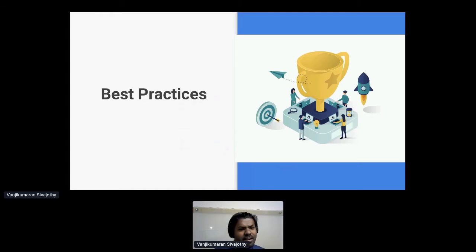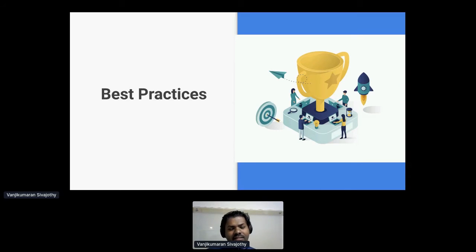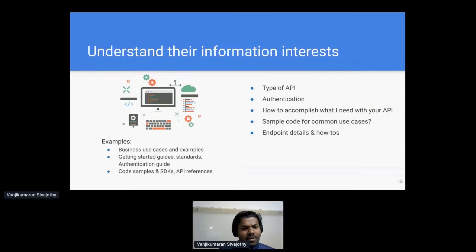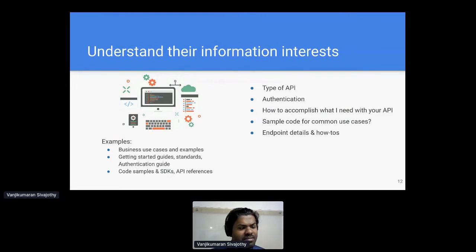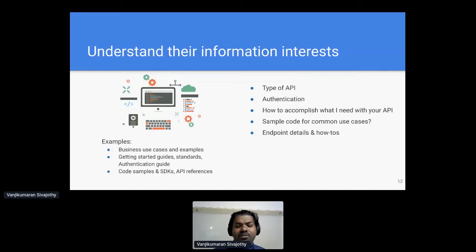With an understanding of the industry, business needs, and different personas, there are plenty of best practices we can enforce to deliver better developer experience and increase API adoption. We can ask multiple key questions with our stakeholders to determine our documentation strategy. At the very first level, we have to investigate which type of API we are going to provide, because API does not always imply RESTful API — it can also be a SOAP API, event-driven API, or any other format to expose your digital interface. We also have to look into the types of APIs that can be created for different business use cases or different subscription models.